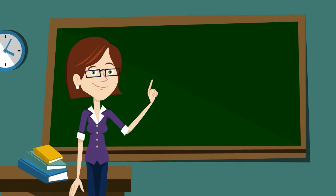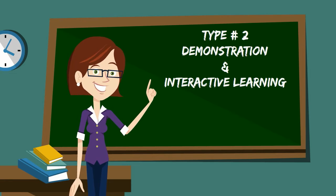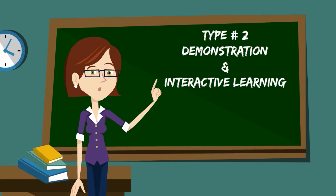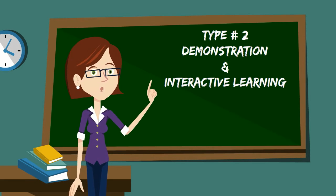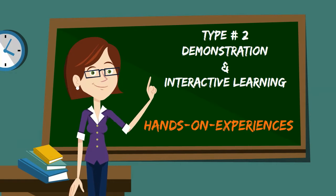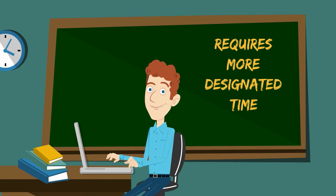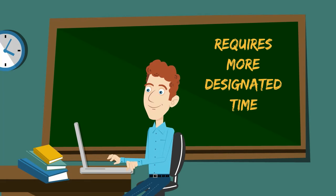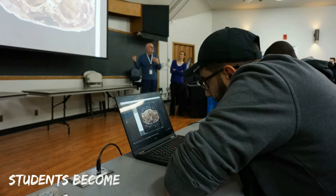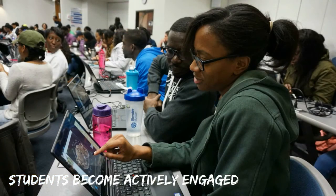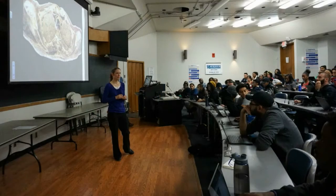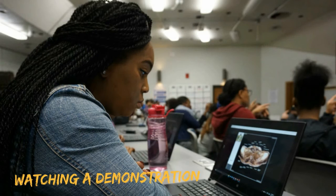The second type of clinical correlation is demonstration and interactive learning. These clinical correlations provide hands-on experiences or the demonstration of a clinical topic. This type requires more designated time than correlated examples but retains the simplicity of the clinical information presented. Students become actively engaged in the correlation activity either by a minimal hands-on approach or by watching a demonstration or review of a clinical procedure.